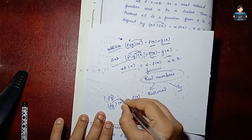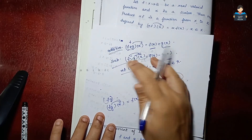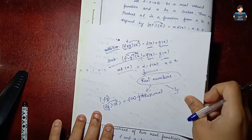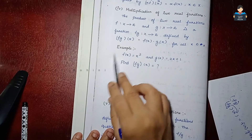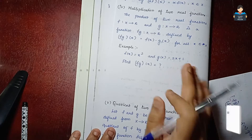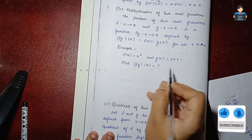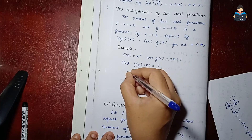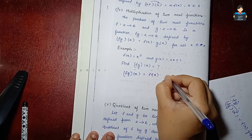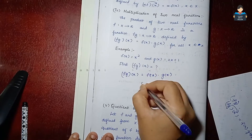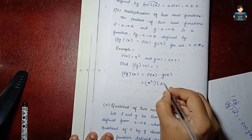Now look at the multiplication of two real functions. f into g of x equals f of x into g of x. Using the same example, f of x is x squared and g of x is 2x plus 1.